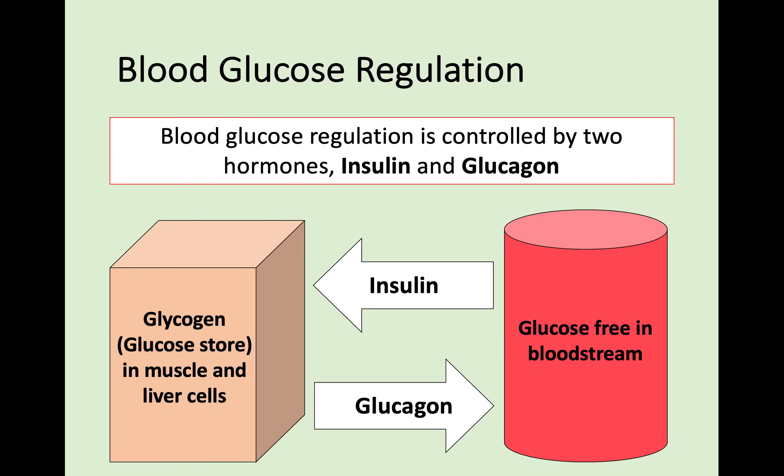We're going to be looking at blood glucose regulation — the sugar going through your blood in terms of what you've eaten and what you need for survival. Blood glucose regulation is controlled by two different hormones: insulin, which you've probably heard of in terms of diabetes, and glucagon. If there is too much glucose floating in the bloodstream, the hormone insulin is released to convert the glucose into glycogen, which is a glucose store, and that gets stored in muscle and liver cells. On the other end, if there is too little glucose, the hormone glucagon is secreted to break down the glycogen back into glucose. This happens constantly to keep homeostasis of your blood glucose.